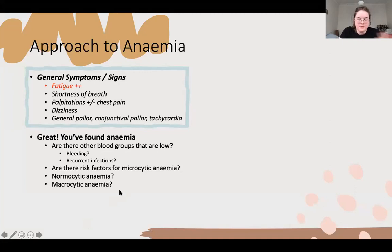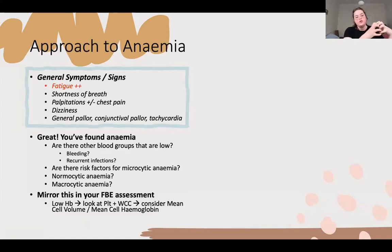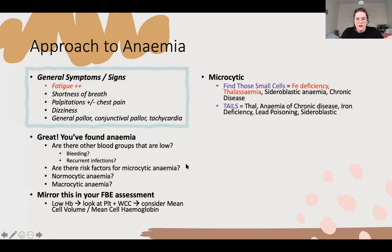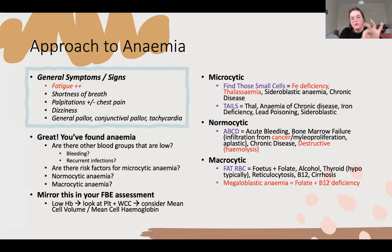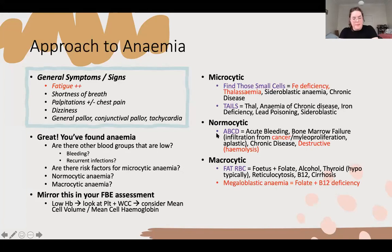Mirror that in your FBE: if you find low haemoglobin, check for low platelets and low white cells as well, and consider the MCV and MCH to tell if it's micro, normal, or macrocytic. These are the buzzwords or mnemonics for the different types - in red are the big ones to know. Your microcytic and macrocytic are the rank-one conditions. Knowing megaloblastic, iron deficiency plus thalassemia as the main differential in microcytic, and remembering that cancer can cause a normocytic anaemia plus a pancytopenia.